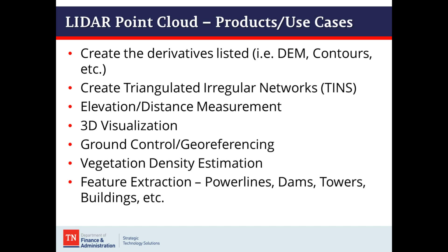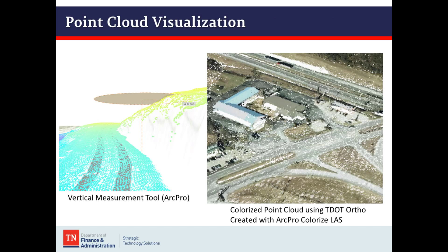Now let's cover the products and use cases for the point cloud. You can create derivatives including the DEM, DSM, contours, and triangulated irregular networks or TINs — a surface generated from the points. You can also do elevation and distance measurement, 3D visualization, ground control geo-referencing, vegetation density estimation, and automated feature extraction. Here are two examples: I'm using the vertical measurement tool in ArcPro to measure the height of a bluff, and the image on the right is a colorized point cloud for 3D visualization using a TDOT ortho.